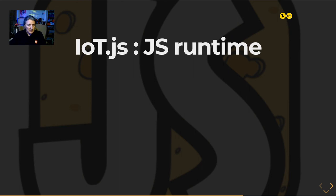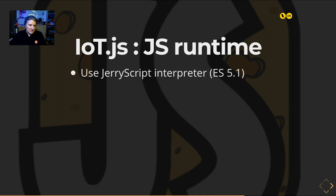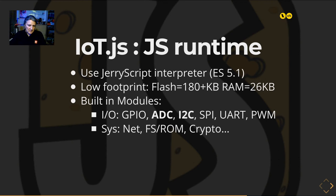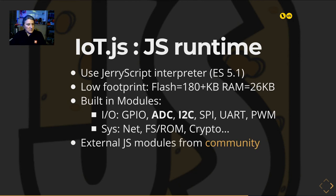To run it, use the JavaScript runtime IoT.js. It uses a JavaScript interpreter — not modern JavaScript — but has a very low footprint: under 200KB of flash and only 26KB of RAM for Hello World. It has built-in module support for buses like ADC, I2C, SPI, UART, and more — useful for sensors — plus connectivity and filesystem modules. All the drivers I've shown support IoT.js.